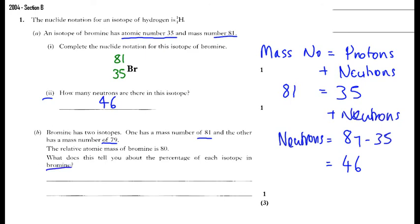Bromine, as I've discussed before, is the element. Both the isotopes are atoms. So the bromine relative atomic mass is the average of the masses of all the isotopes, depending on the natural abundance.